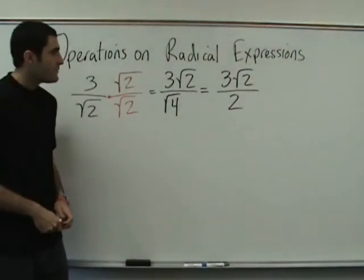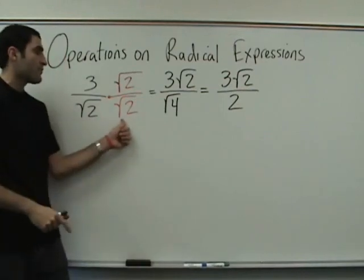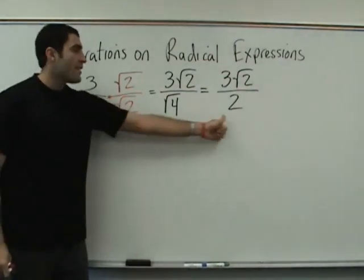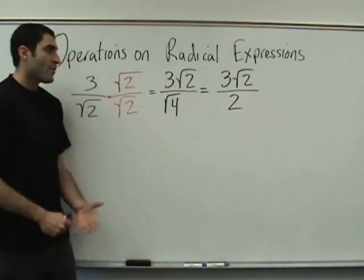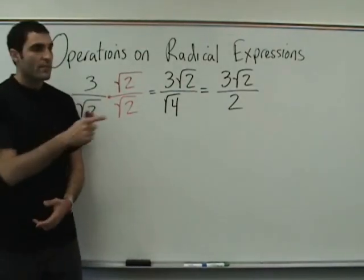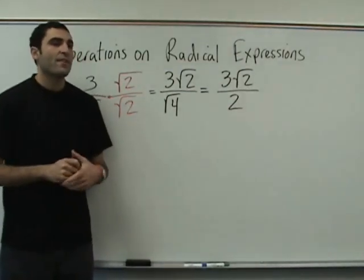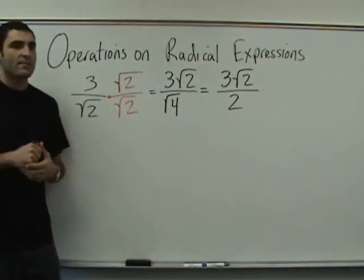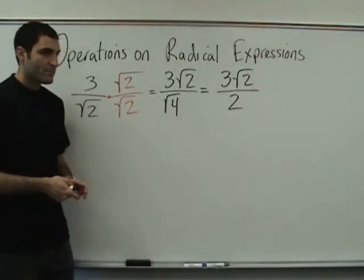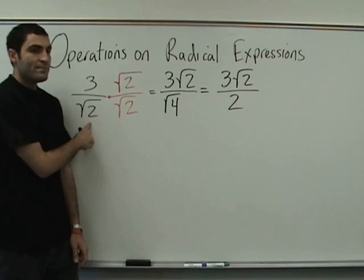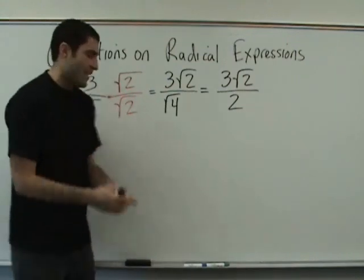Why did you have to do the square root of two? Because multiplying this square root of two by that square root of two essentially removed the square root, because it became square root of four. And now the goal is to get no square roots on the bottom — on the denominator. If you accomplish that goal, then you're fine. You multiply top and bottom by this number — until further notice, it's going to get more challenging.